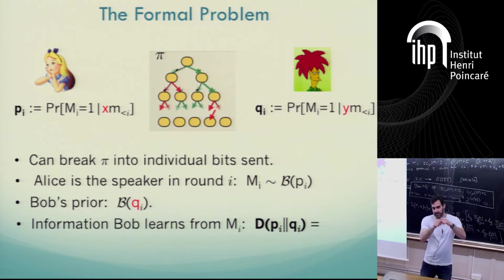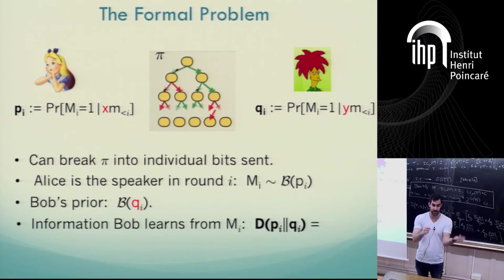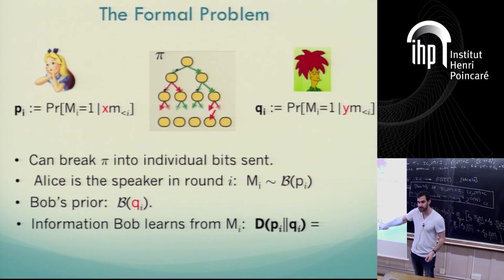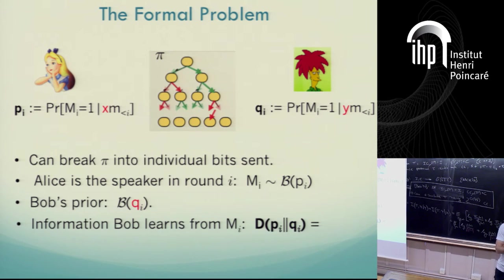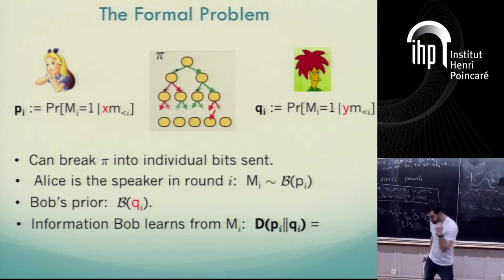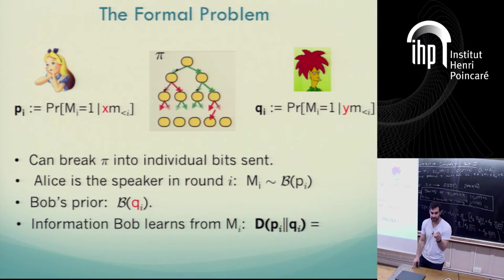Here's a claim I'm not going to formally prove but you can easily prove using the chain rule: if you sum up those KL divergences, you get exactly I, the information cost of the protocol. You can view any protocol as a random walk where with probability pi_i it goes right, with probability 1-pi_i it goes left, and the information incurred by each step is exactly the divergence. We then define a more fine-grained quantity: the information cost of a single round, a single bit with a single history.